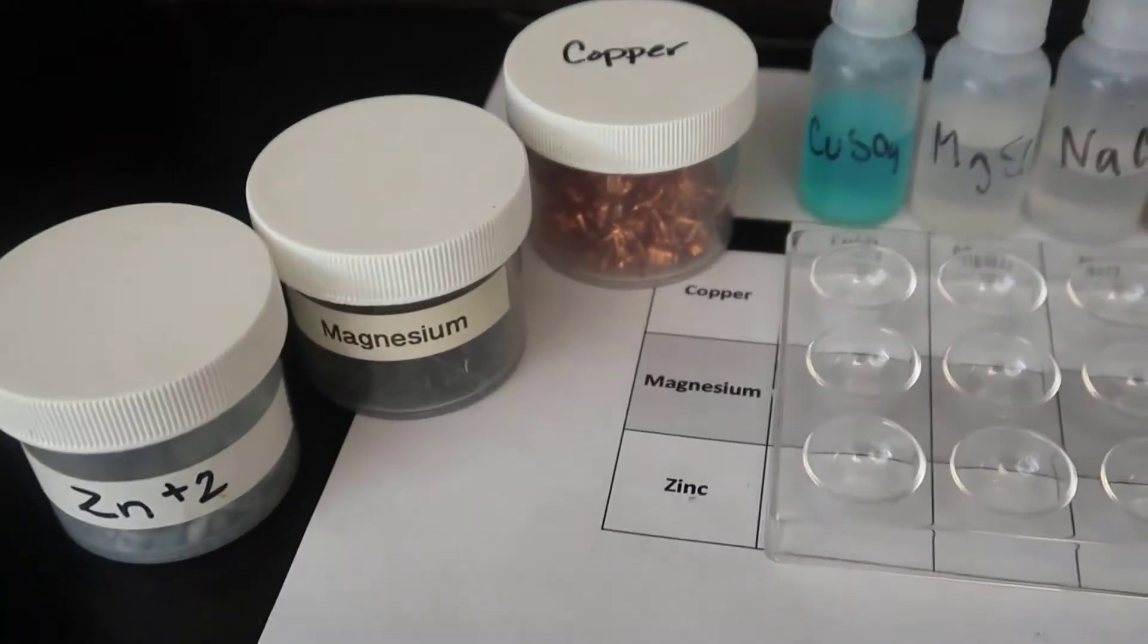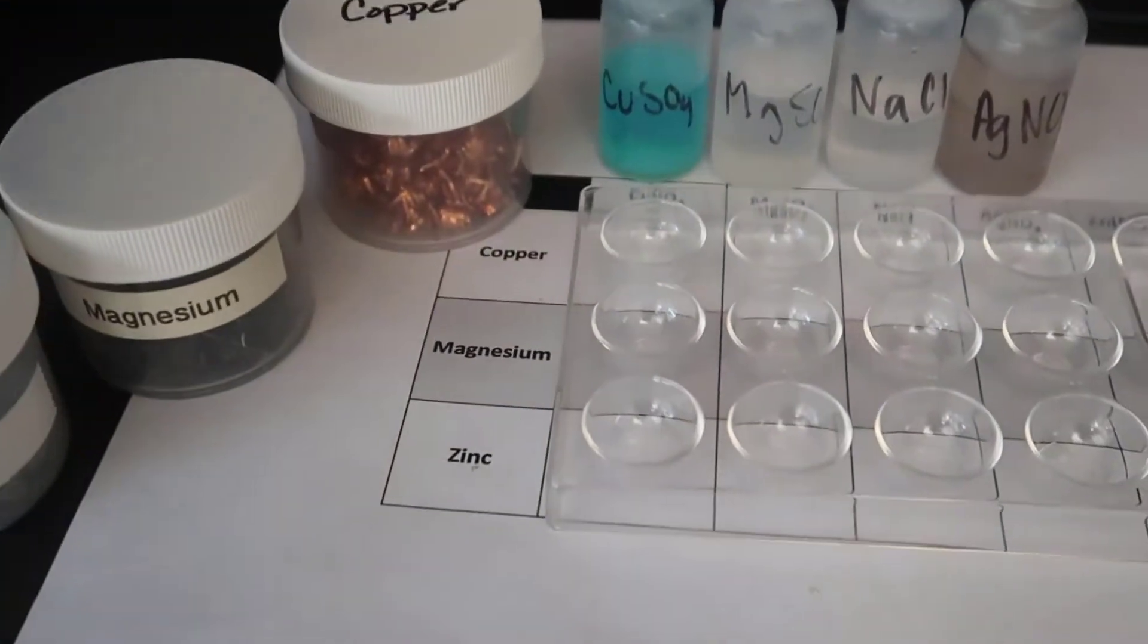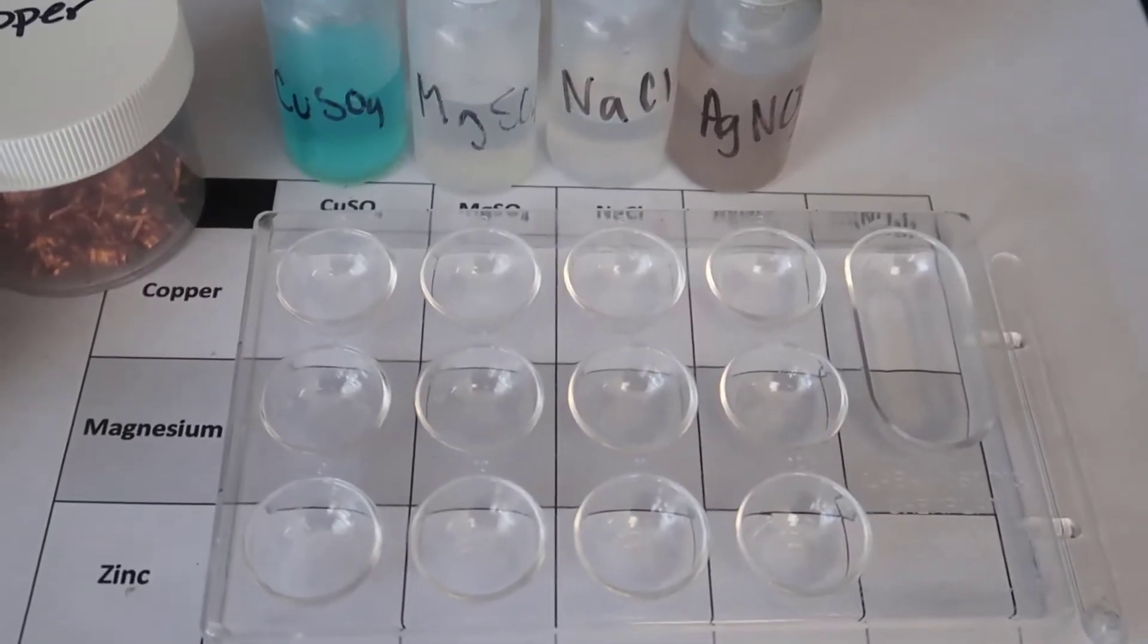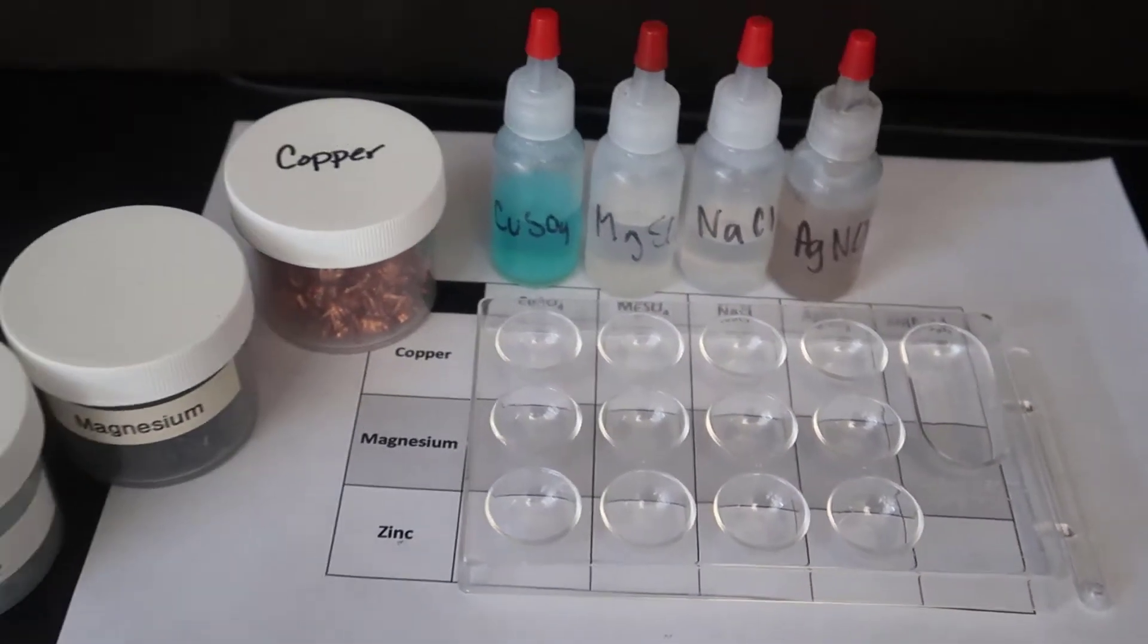What I'm going to do is I'm going to first polish the metals, and then I'm going to take a piece and place in each spot in the well plate, wait about five minutes, and then we'll look at the results.